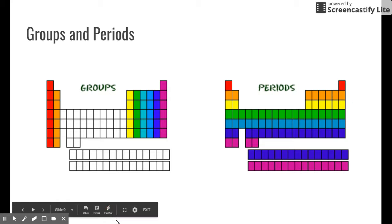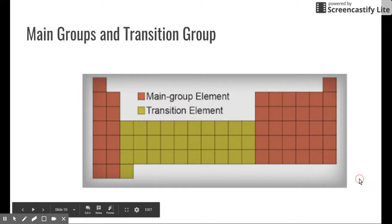So this is lingo you're going to need to know, and be aware of it because I'm no longer going to use, and we should no longer use, columns and rows. We need to call them groups and periods when we talk about the periodic table.